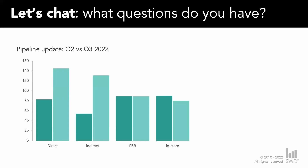Here's a graph. It's called Pipeline Update. We're comparing Q2 to Q3. What I'd love for you to do is just maybe make some mental notes, study what you're looking at, and then share in the chat window: what questions do you have? What's confusing? Do you find yourself making some assumptions about any of the data that you're seeing?